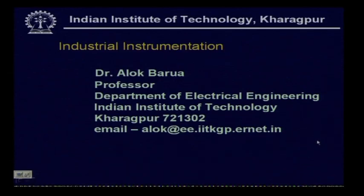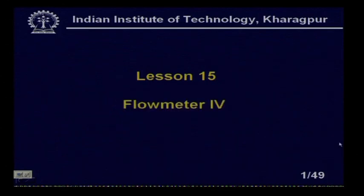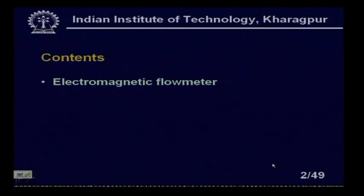This is lesson 15 of industrial instrumentation. We will continue with the flow meter. This is lesson 15 and we will discuss the flow meter 4. In this lesson, we will cover the electromagnetic flow meter and the ultrasonic flow meter. These two basic flow meters we will discuss in this particular lesson.